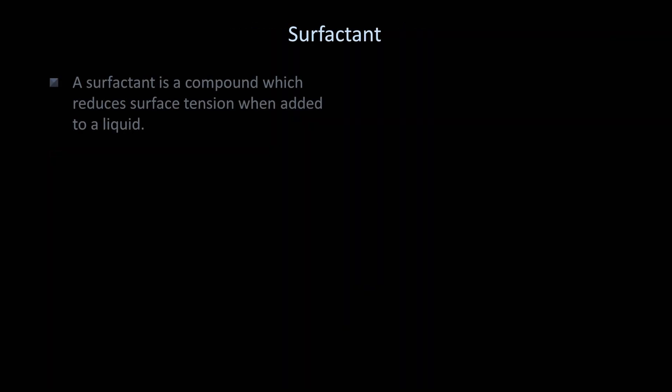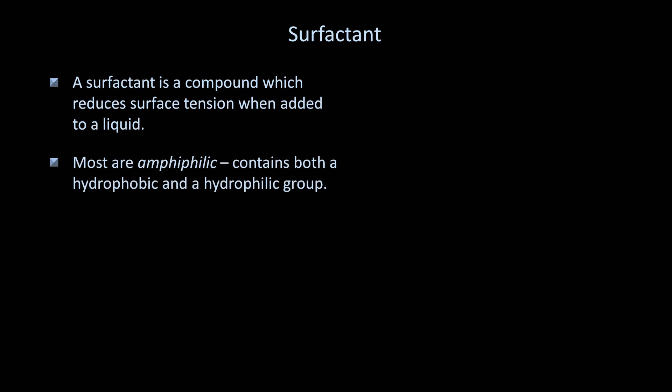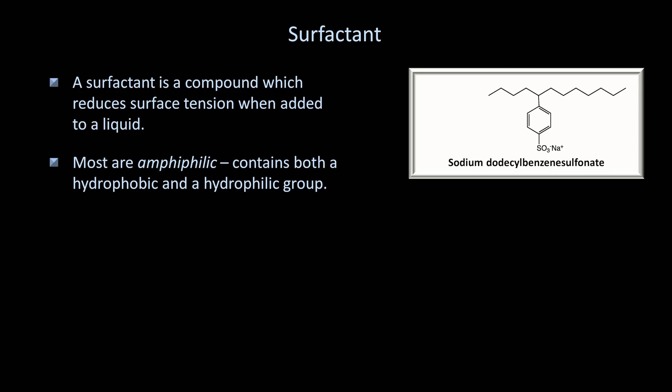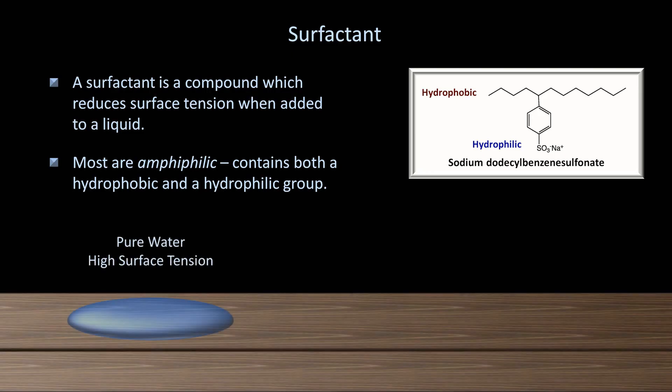This is obviously not good, so the body must have a way to prevent this from happening — and it does, involving something called surfactant. A surfactant is a compound which reduces surface tension when added to a liquid. Most surfactants are amphiphilic, sometimes called amphipathic, which means they contain both a hydrophobic and a hydrophilic group. Here's the structure of a surfactant called sodium dodecylbenzene sulfonate, which is a common component of laundry detergent, with its hydrophilic and hydrophobic groups labeled.